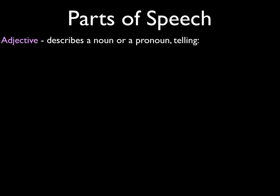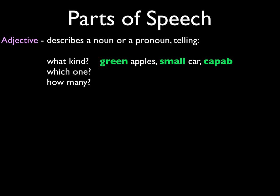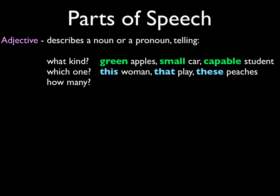Let's move on to adjectives. An adjective describes a noun or a pronoun, telling a number of things. It answers 'what kind' — a green apple, a small car, a capable student. An adjective can also tell you 'which one' — this woman, that play, these peaches over here are on sale. And an adjective can also answer 'how many' — some birds, two squirrels, etc.